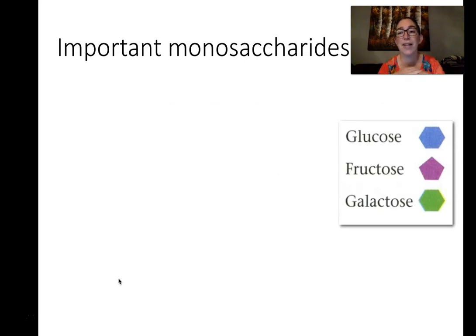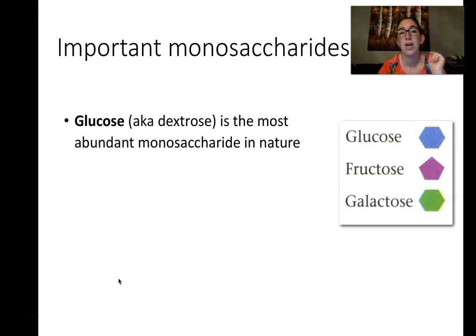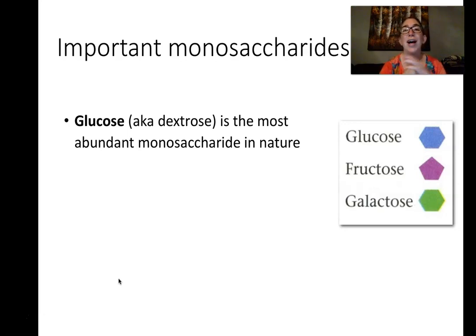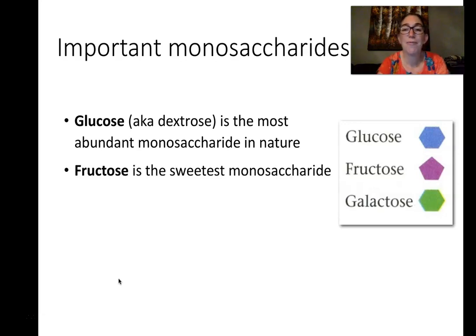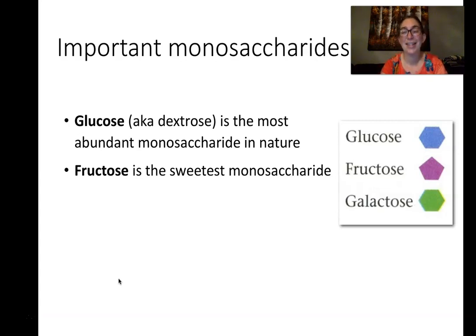The important monosaccharides are glucose, fructose, and galactose. Glucose is also called dextrose in the chemistry field — you may see it listed as dextrose on nutrition labels, since many companies try to hide their sugar content using fancy terms. So if you see dextrose on an ingredients list, that's code for sugar. Fructose is the sweetest monosaccharide and is found primarily in fruits, which is why it's called fructose — it literally means fruit sugar, and it's why fruits are so yummy.